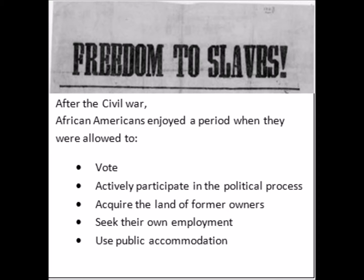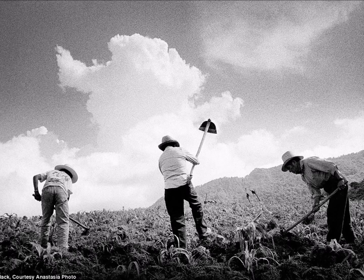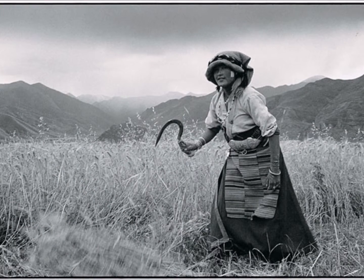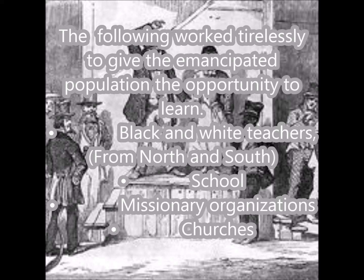After the Civil War, African Americans enjoyed a period when they were allowed to vote, actively participate in the political process, acquire the land of former owners, seek their own employment, and use public accommodations. Increasingly, both white and black farmers came to depend on local merchants for credit. A cycle of debt often ensued, and year by year the promise of economic independence faded. Black and white teachers from North and South, schools, missionary organizations, and churches worked tirelessly to give the emancipated population the opportunity to learn.